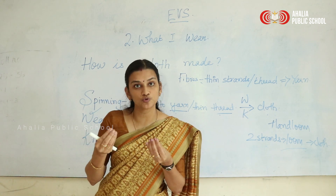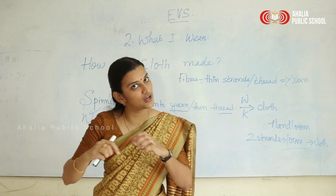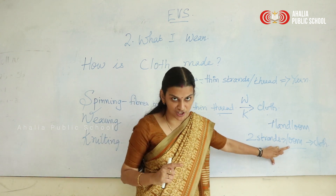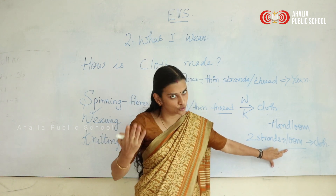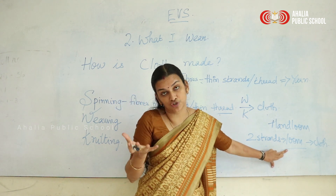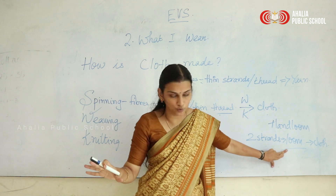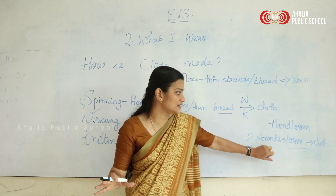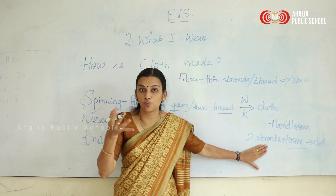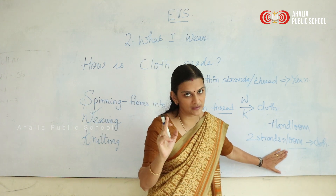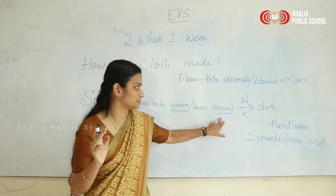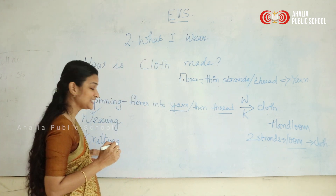In weaving, two strands are used inside a machine called a loom, where they are joined, combined, or crossed one over the other to make cloth. A handloom is one type — your grandparents likely had most of their wardrobe made from handloom cloth. So weaving is one method to convert yarn into cloth.